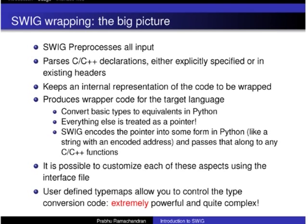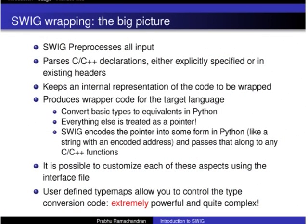So what's the big picture on this? SWIG first preprocesses all input — SWIG has its own preprocessor, more powerful than the C preprocessor, so you can define and undefine things. It then parses the C++ declarations you give it either through a header file or explicitly in the interface file, and keeps an internal representation. This is very useful for inheritance — it tracks the hierarchy and lets you do it properly in Python, then generates the suitable Python shadow class. Then it generates wrapper code for the target language.